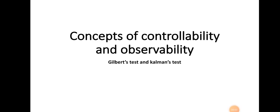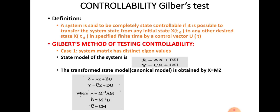Hello dear students, today we are going to discuss the concepts of controllability and observability. We will be checking controllability and observability using two tests: Gilbert's test and Kalman's test. A system is said to be completely state controllable if it is possible to transfer the system state from any initial state x(t0) to any other desired state x(td) in a specified finite time by a control vector u(t).